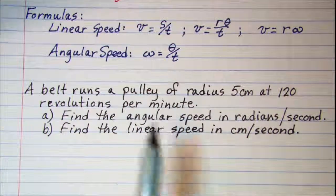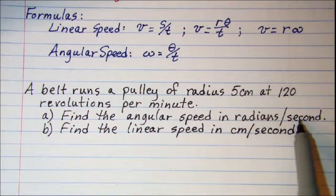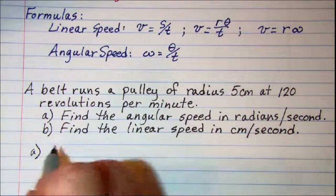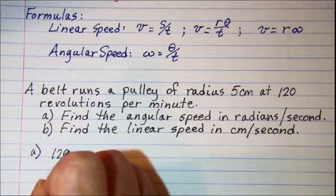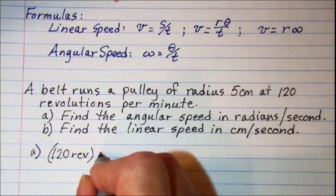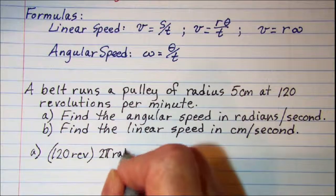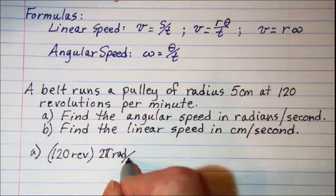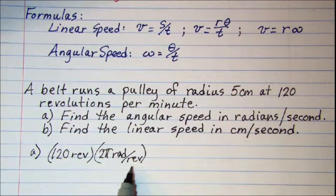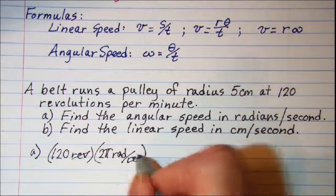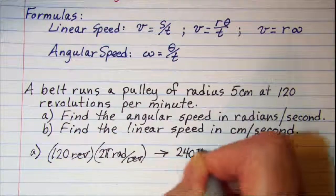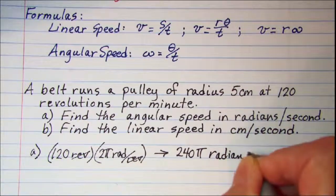So we need to change that from this angular speed to radians per second. Since one revolution is 2π radians, we can say that 120 revolutions gets multiplied by 2π radians, and that's actually 2π radians per revolution. That'll give us the number of radians per minute that we're revolving because these revolutions cancel. So it's actually going 240π radians per minute.